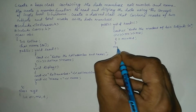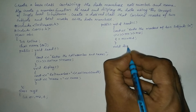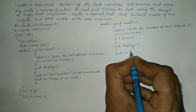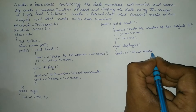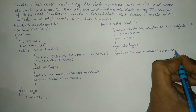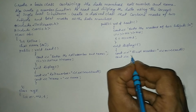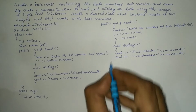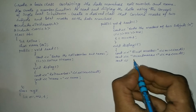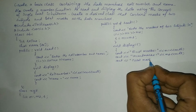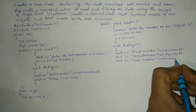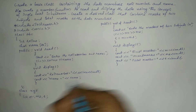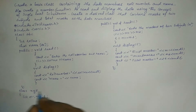Next we will display the same using one more user defined function called void display1. Inside the curly braces we write cout first marks is equal to m1, endl, cout second marks equal to m2 endl, and then print total marks is equal to t with endl. Curly closing brace for this void display1 function and one more curly closing brace for this class definition, followed by semicolon.